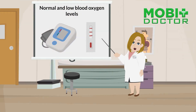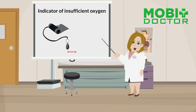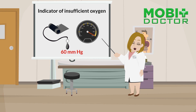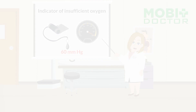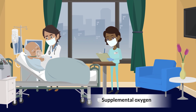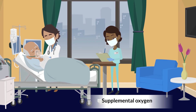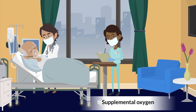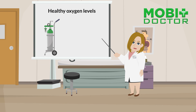Our body's functions are optimal when our oxygen levels are normal. A reading below 60 mmHg is an indicator of insufficient oxygen. In such a scenario, supplemental oxygen is used to restore the oxygen levels back to normal. Healthy oxygen levels range between 75 and 100 mmHg.